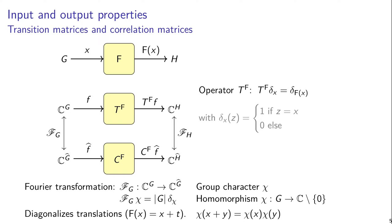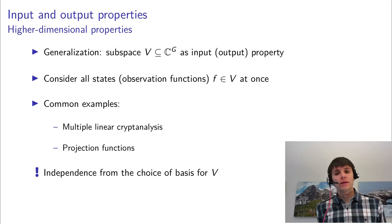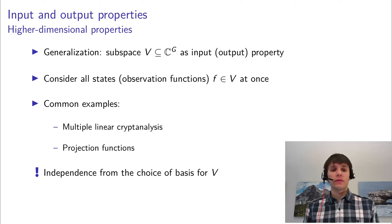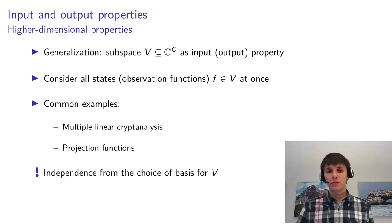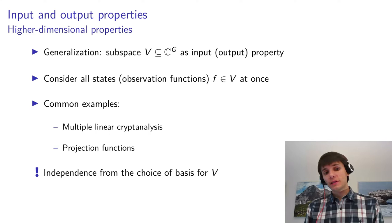So far I've discussed only one-dimensional input properties. But in fact we can generalize this: we can say the input property or output property is a subspace of functions. That just means that we consider, in the case of the input, all possible states in this subspace at once. And similarly, we consider inner products with all possible functions from this vector space for the case of output properties. This is necessary, for example, for multiple linear cryptanalysis.